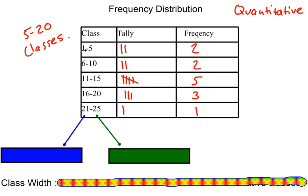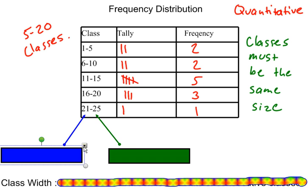A couple of things to keep in mind: the classes all need to be the same size. If our classes are different sizes, that creates confusion and deception. We don't want to deceive anybody with the graphs or distributions we're creating, so the classes need to be the same size and have the same width.